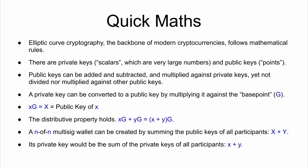This is where it really gets interesting, and this is the part you actually have to understand. If you add two public keys together, it's actually XG plus YG. The distributive property holds: if you add two public keys, you get the same value as if you added two private keys and then turned it into a public key. This means you can create an N-of-N multisig wallet by adding together everyone's public keys, and the private key for the multisig wallet would be the sum of all their private keys.